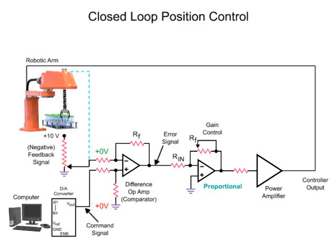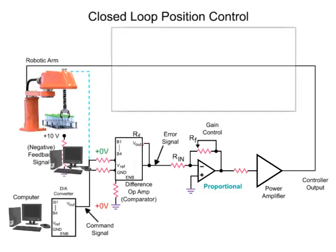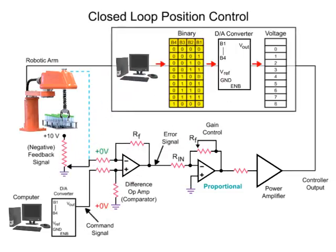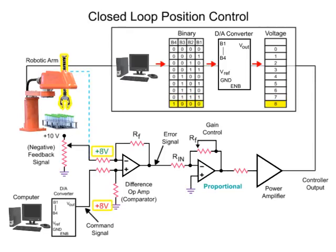To change the arm to another position, a command signal from the computer is required. The command signal consists of binary numbers that increment until a value is reached that represents the desired position. The binary value is then converted to an analog voltage by the digital-to-analog converter that indicates the position that the arm is required to move.